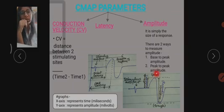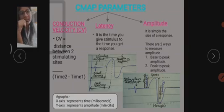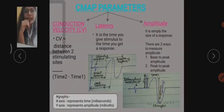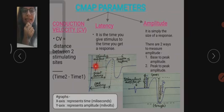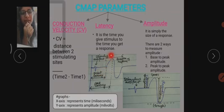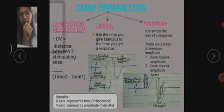The next parameter is latency. In layman's terms, latency is the time for which the contraction has occurred. In the nerve conduction study pattern, latency refers to onset latency — the time from stimulation to the onset of response. We then get a positive response, followed by further response. The x-axis of the nerve conduction graph represents time in milliseconds, and the y-axis represents amplitude in millivolts.